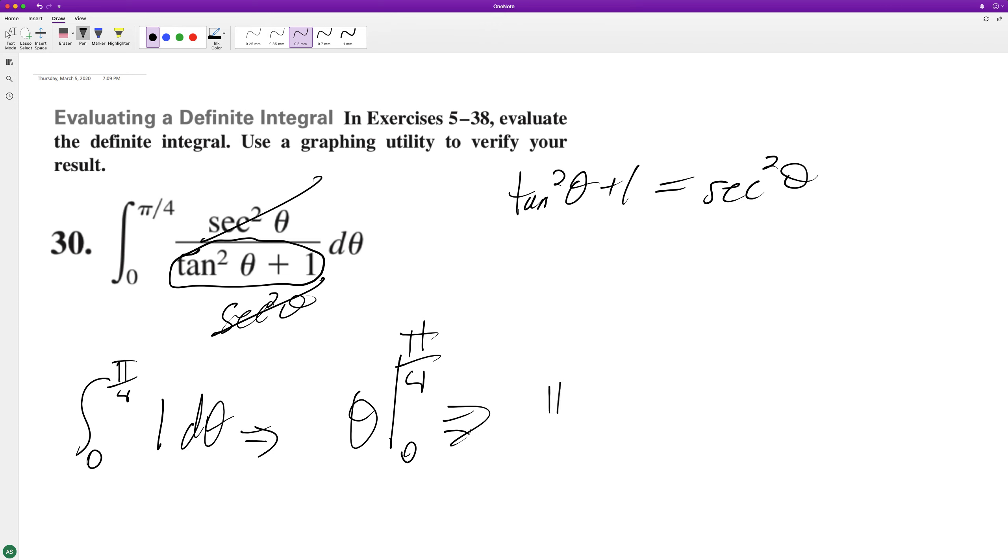And when we plug these in, we get pi over 4, minus 0, which is equal to pi over 4.